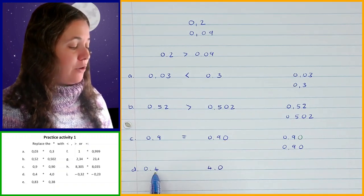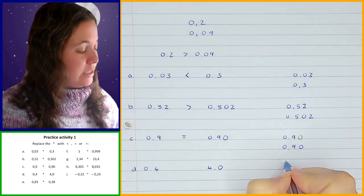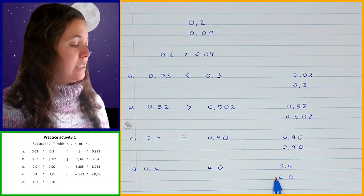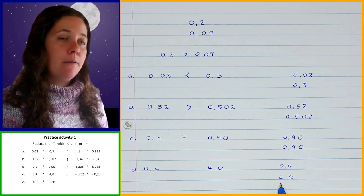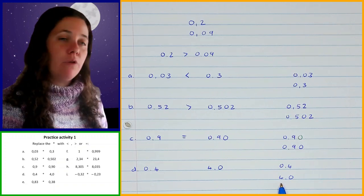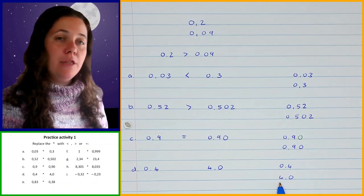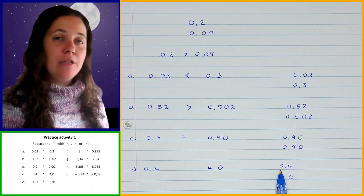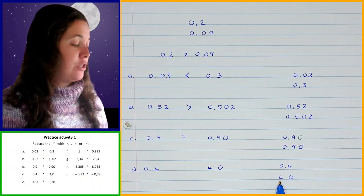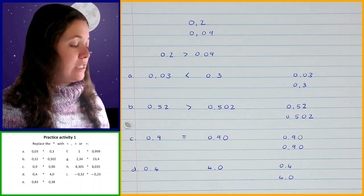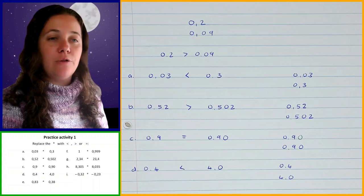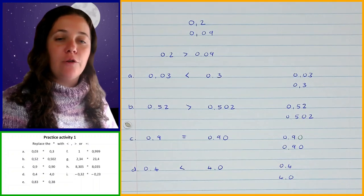Okay, the next one I've got 0.4 and 4.0. In this case, as I look from left to right, the 4 in 4.0 is in the ones position, and in 0.4 the ones position is just zero. So this one is greater than that. So 4.0 is greater than 0.4, or 0.4 is less than 4.0.